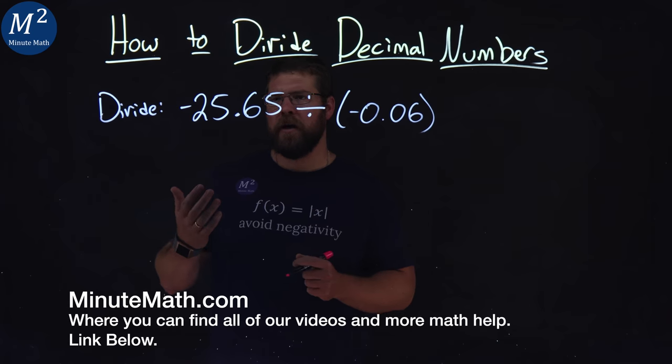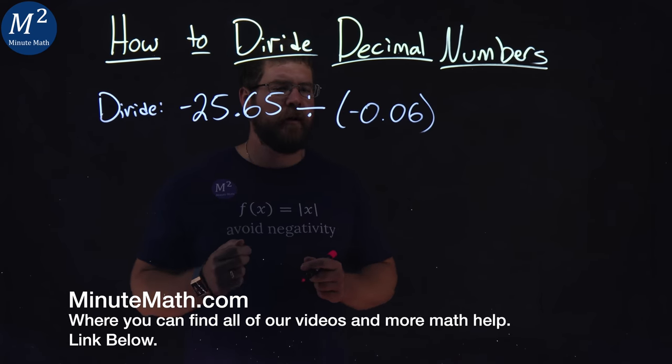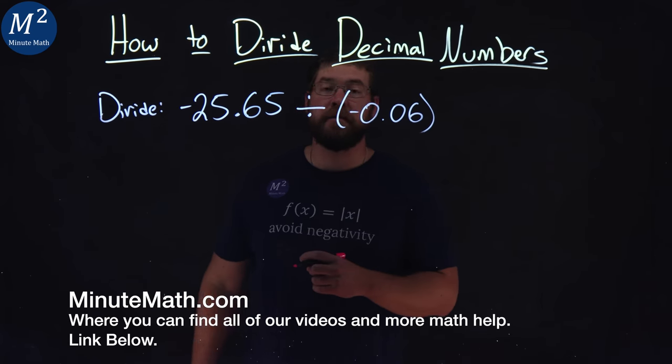We're given this problem right here. Divide negative 25.65 divided by negative 0.06.